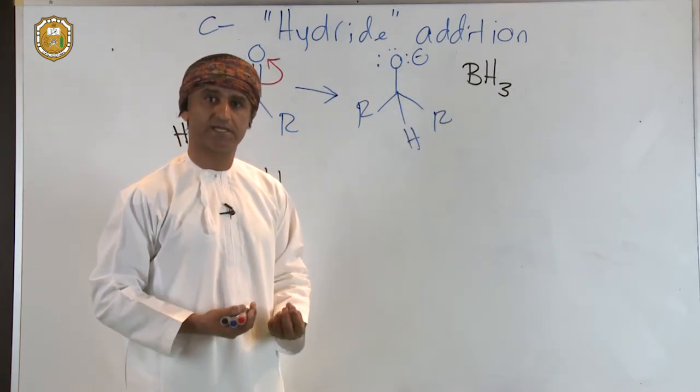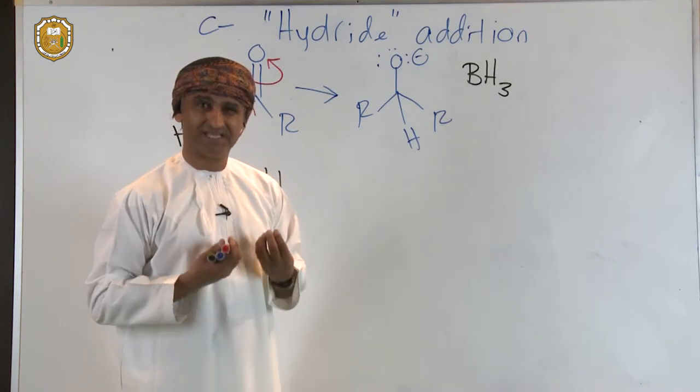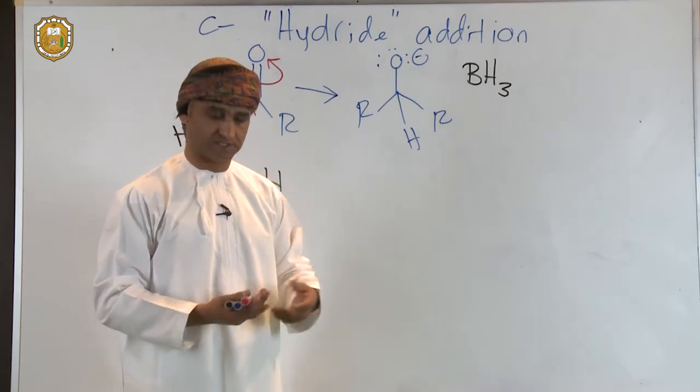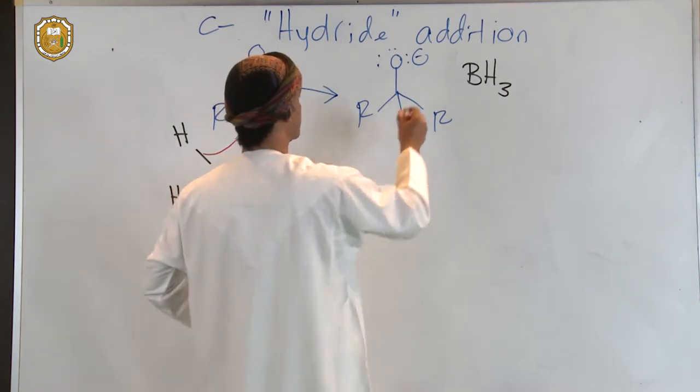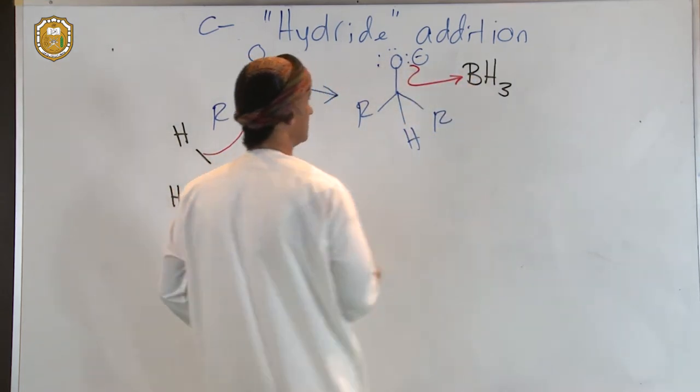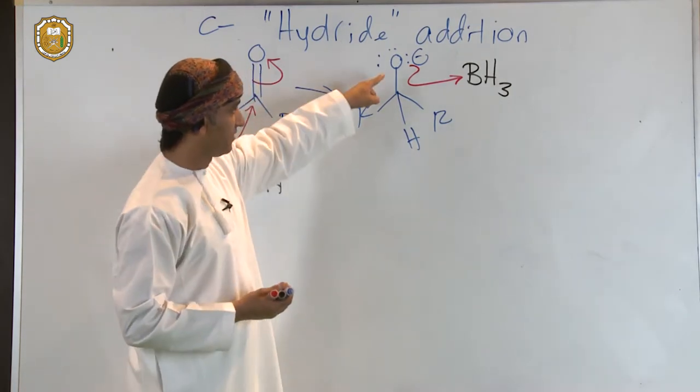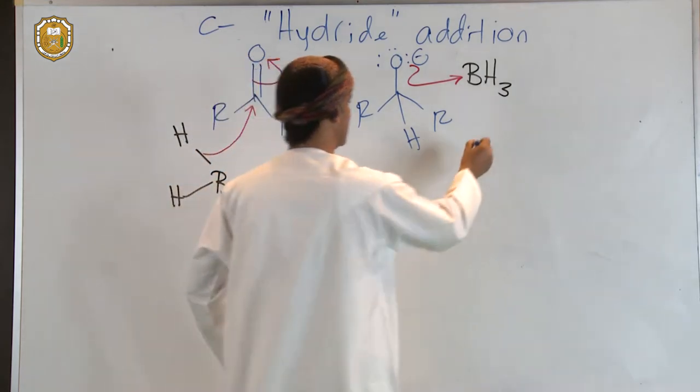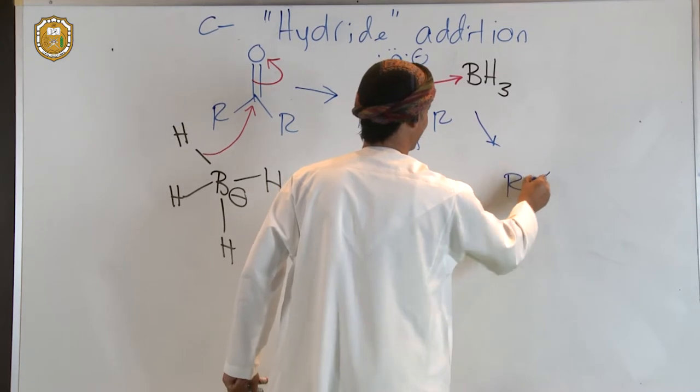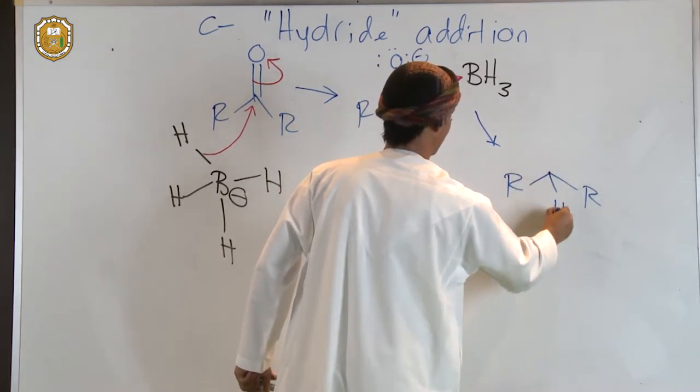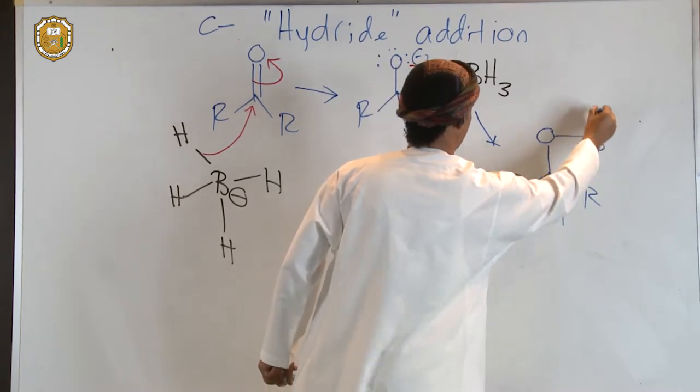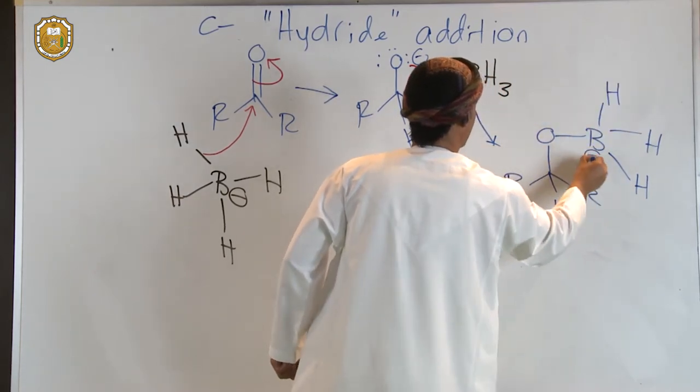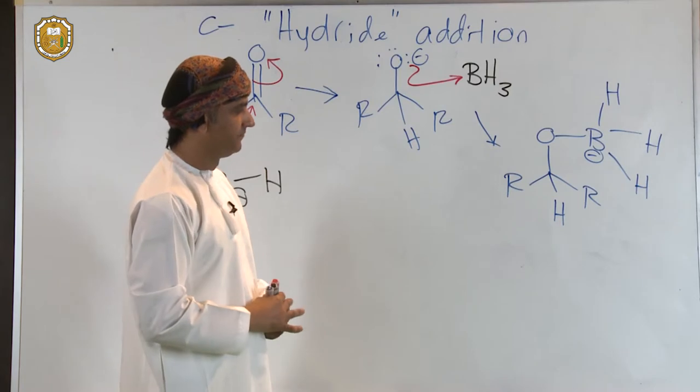Boron is Lewis acidic because it has an empty p orbital. It has a vacant p orbital, therefore it behaves as a Lewis acid. In other words, it can react with Lewis bases. We can show this reaction with an arrow like that. So we indicate movement of two electrons from the Lewis basic oxygen to the Lewis acidic boron. So what we get next is this intermediate, where boron has a negative charge.